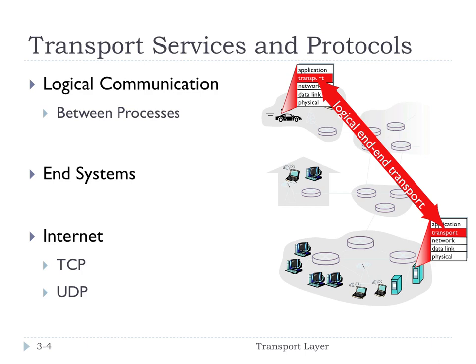The sender side is going to break application messages into segments — into chunks — and pass those segments to the network layer to move them across to the final endpoint. The receiver is going to reassemble those segments into the original application layer message and pass that up to the application layer. That's another way of saying the sender does multiplexing and the receiver does demultiplexing.